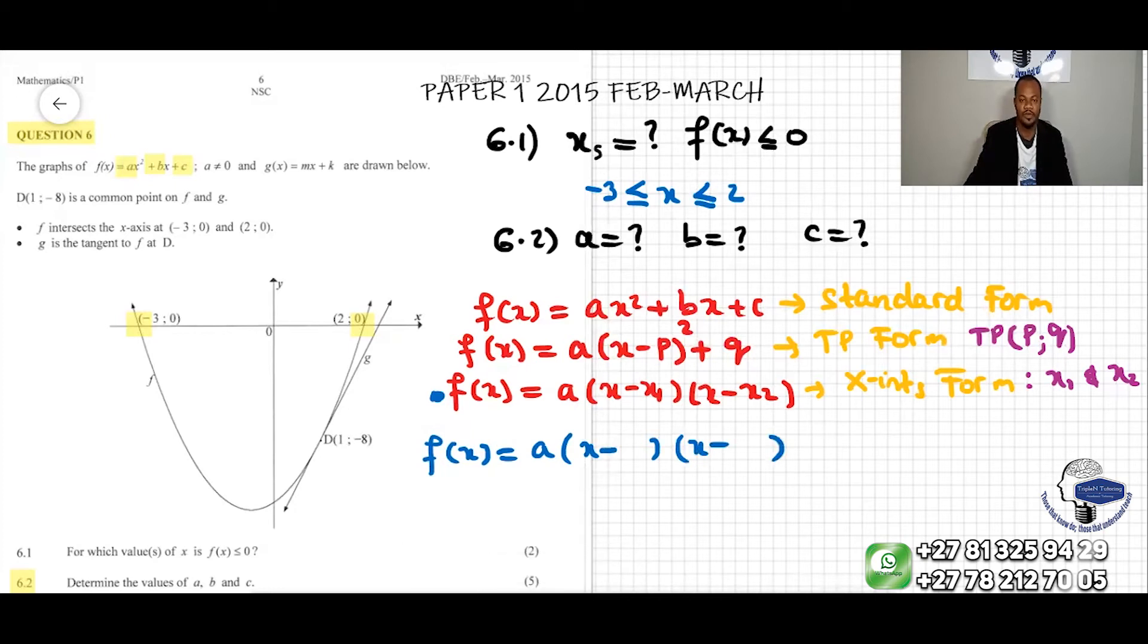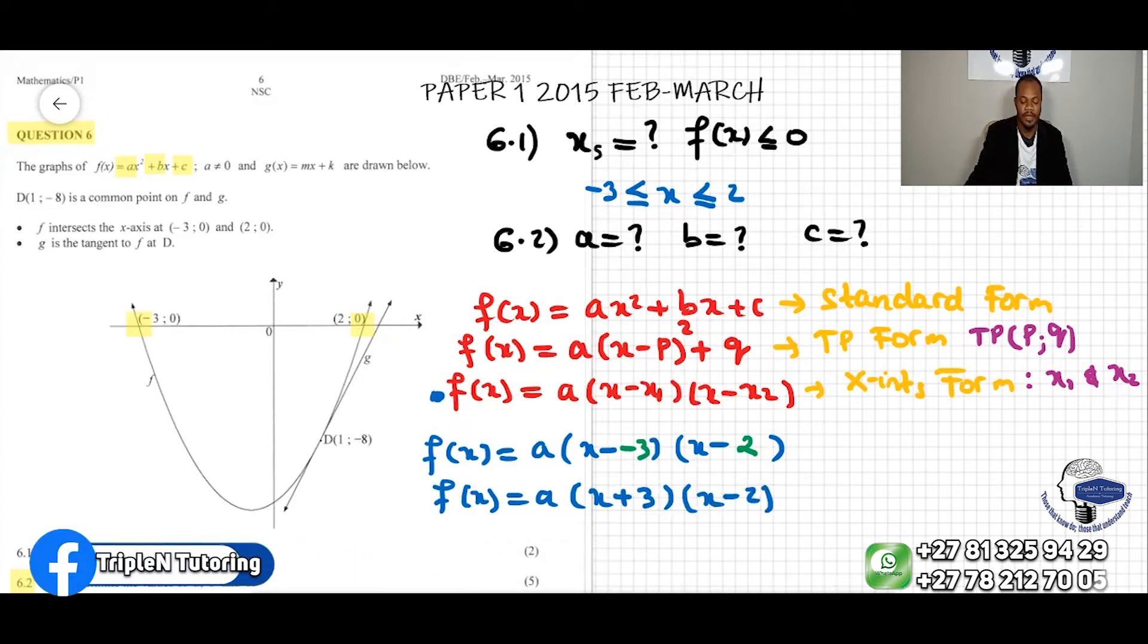We can sub in the values of x₁ is negative 3 and x₂ is positive 2. So f(x) will be equal to a(x - (-3))(x - 2), which is a(x + 3)(x - 2).